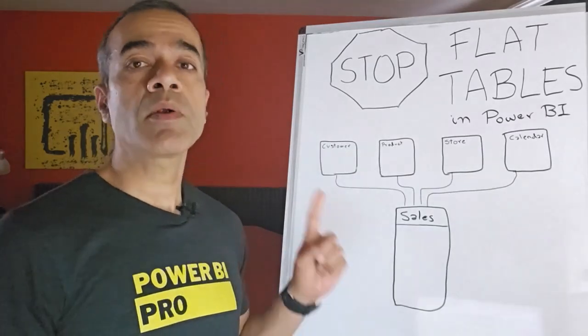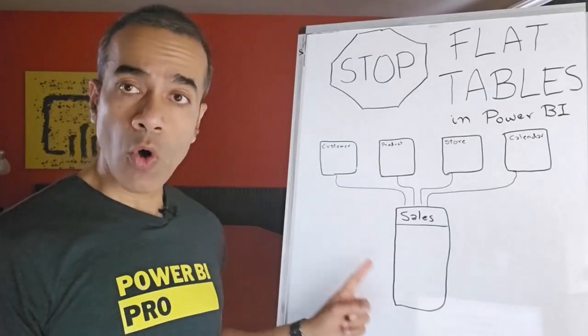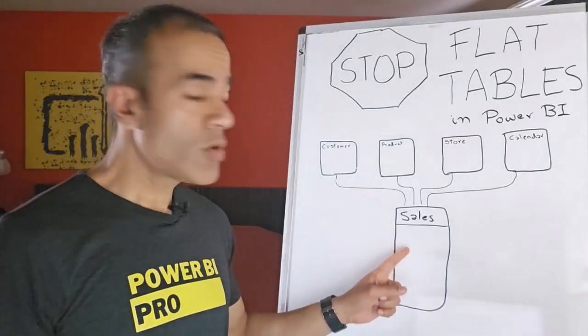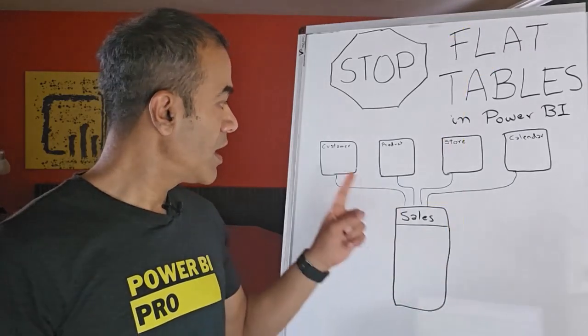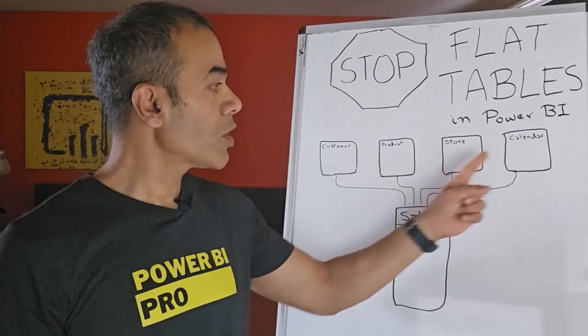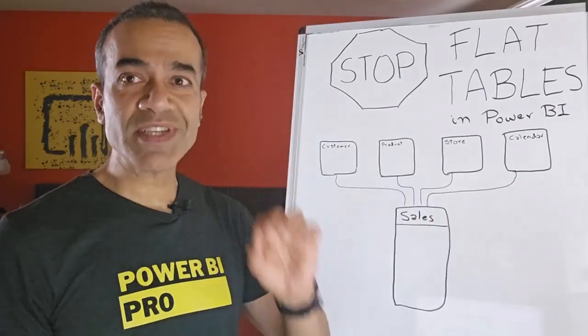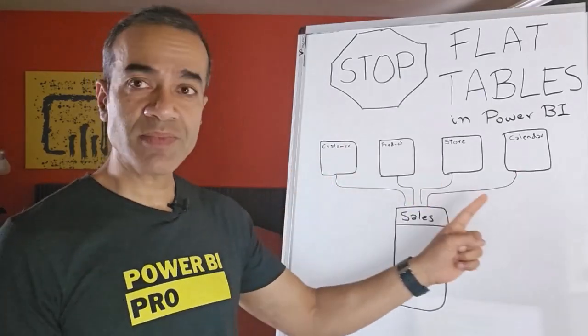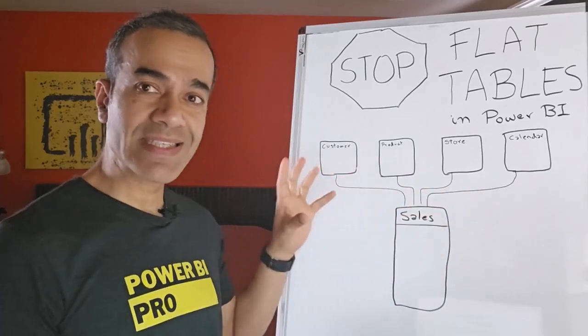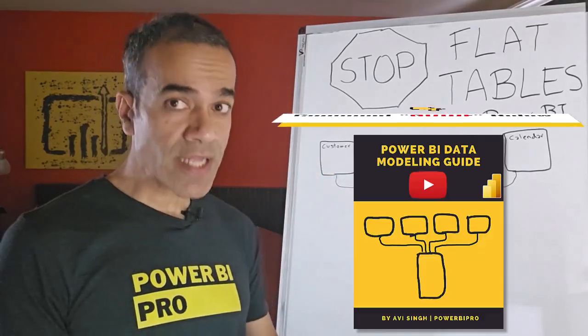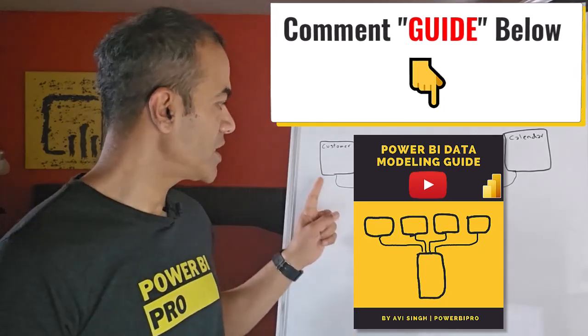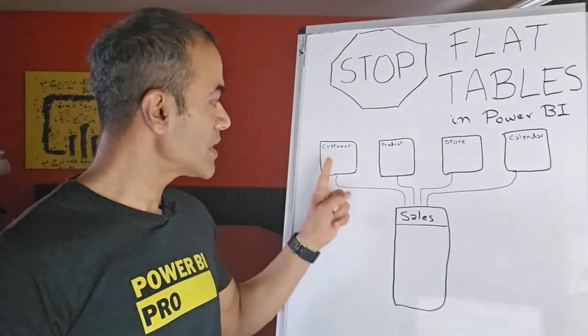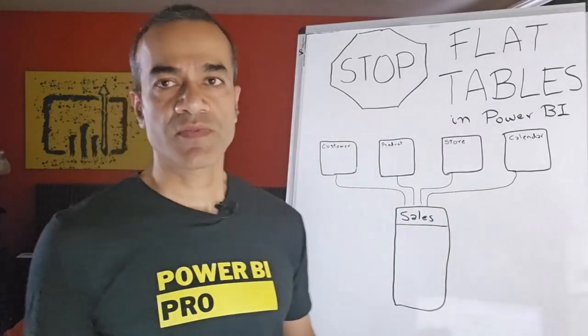This is what a proper Power BI model should always look like. Down below you have the data table which I call a giraffe. Up here are our lookup tables which I call hippos. Giraffes and hippos are actually intentional terms and they're going to help you understand and do the data modeling right. But to find out what they mean you're going to have to ask for the cheat sheet. But again this is a data table, this is a lookup table. What is the advantage of this?